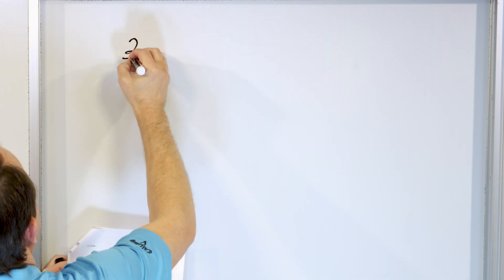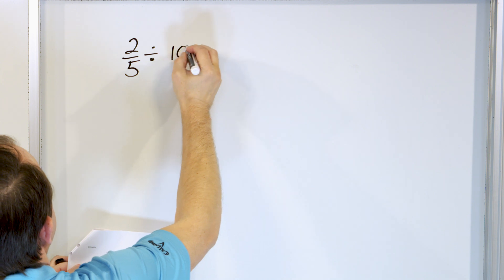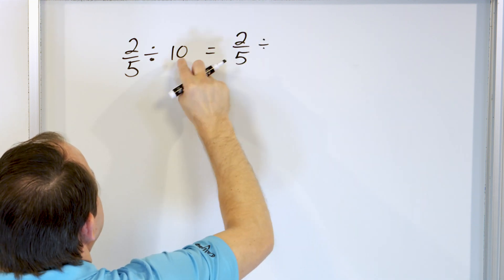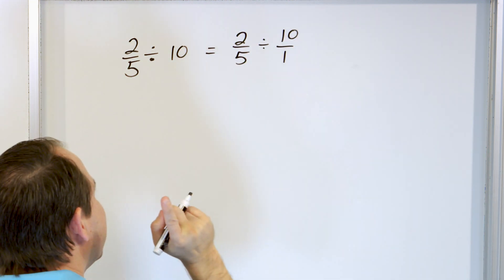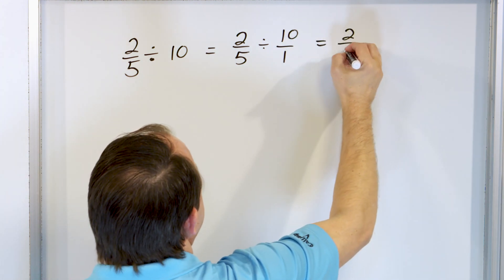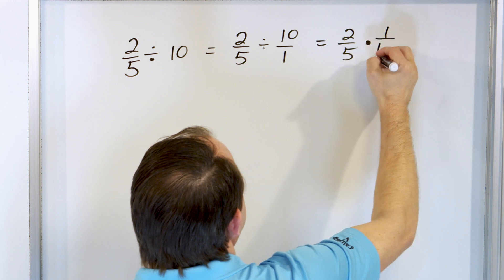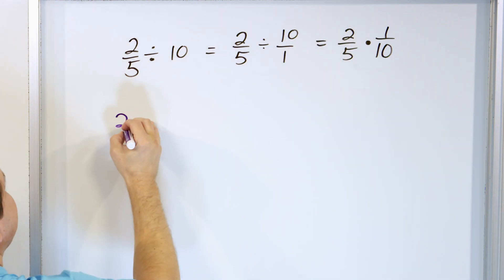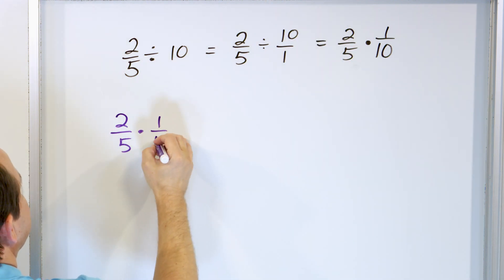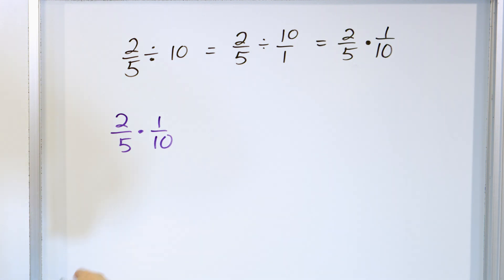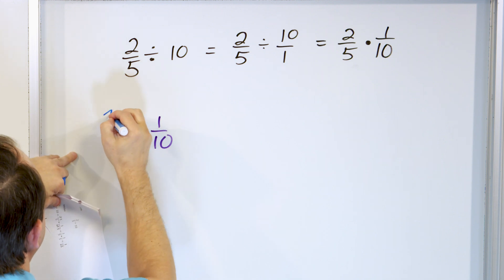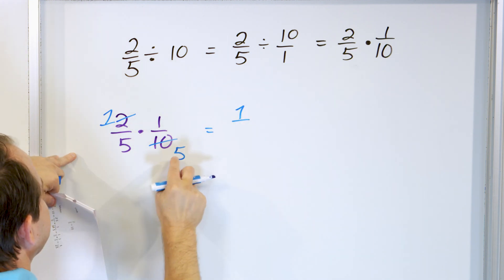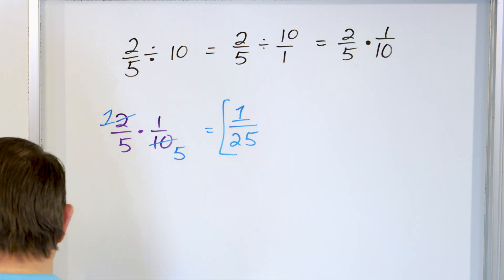Let's look at two-fifths divided by ten. First, turn ten into ten over one. Then change to multiplication and flip the second fraction over to one-tenth. Rewriting: two-fifths times one-tenth. Pre-simplify: two and ten — divide by two: two divided by two is one, ten divided by two is five. Then multiply: one times one is one, five times five is twenty-five. The answer is one-twenty-fifth.